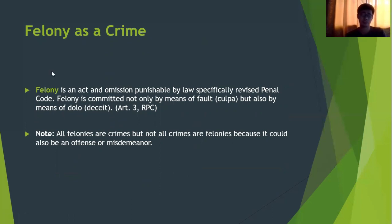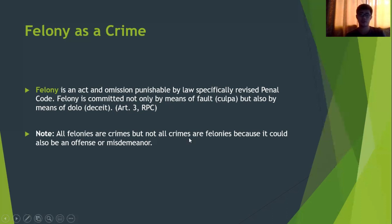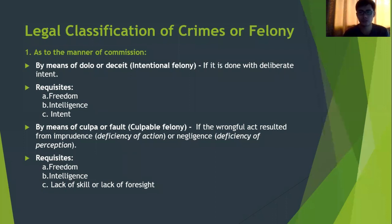A felony may be committed by two means: first, by means of fault or culpa; second, by means of dolo or deceit — literally, by intentional and unintentional felony. Note that all felonies are crimes, but not all crimes are felonies, because a crime could also be an offense or an infraction.